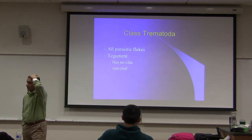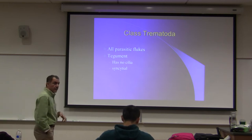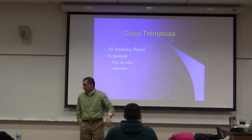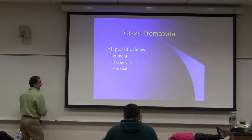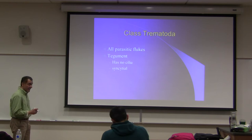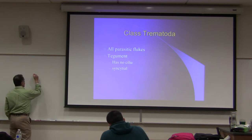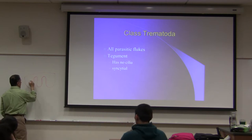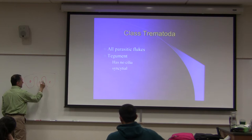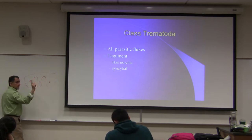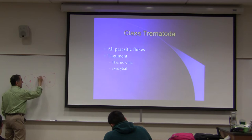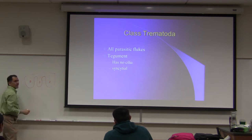Unlike Planaria, which had cilia on the ventral side, these guys have no cilia. The syncytial cells of the integument are like this - they have a cell membrane, and a nucleus here, a nucleus here, a nucleus here. It looks like three cells, but it's all one cell. The cytoplasm can float around from one area to another - that's what syncytial means.